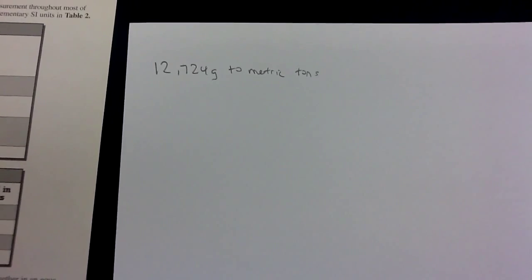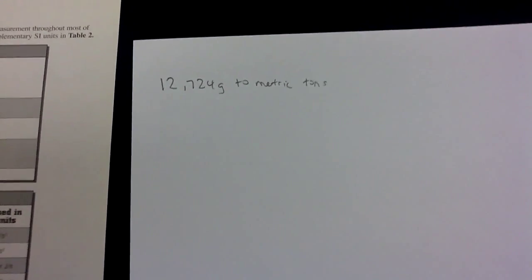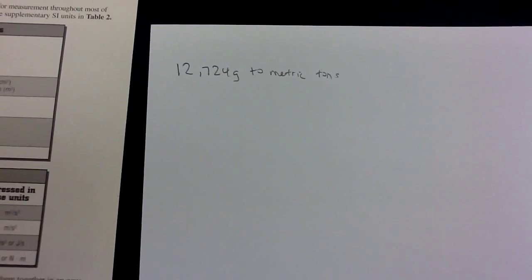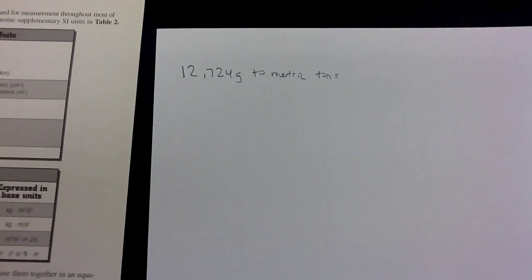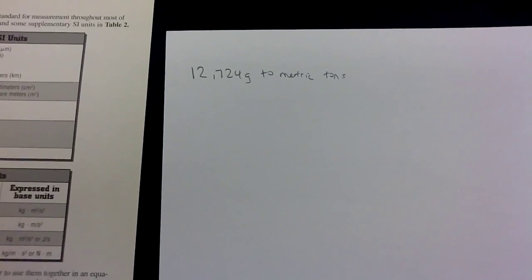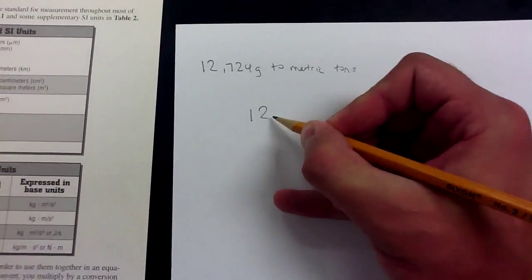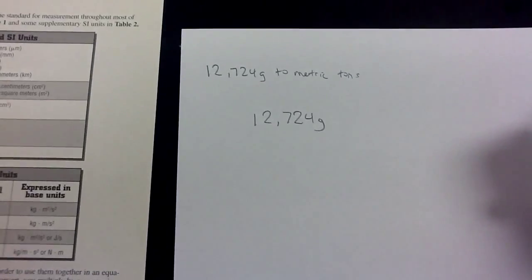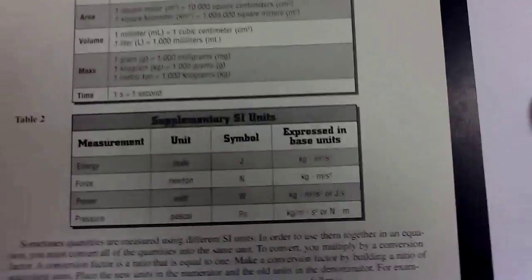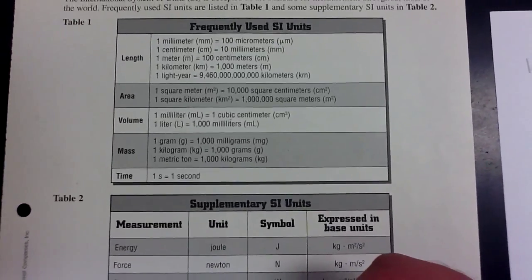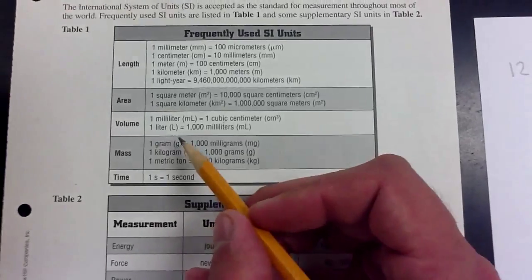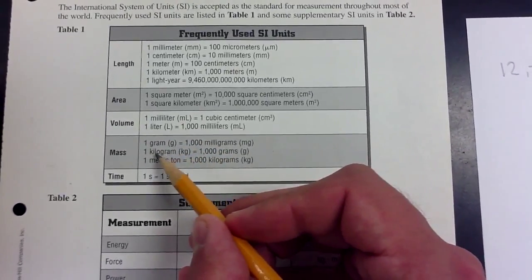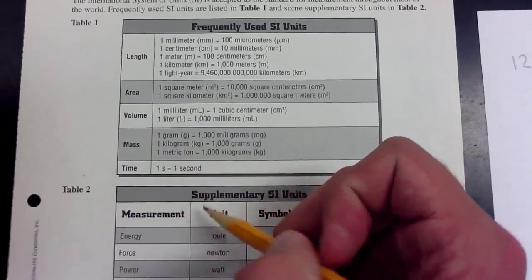We want to convert 12,724 grams to metric tons. Try to solve that one, and if you think you got it, unpause the video and watch the solution. Okay, here we go. To convert 12,724 grams to metric tons, we first have to find a conversion, but there isn't a direct one. So we're going to have to do a double conversion — first change grams to kilograms, then change kilograms into metric tons.